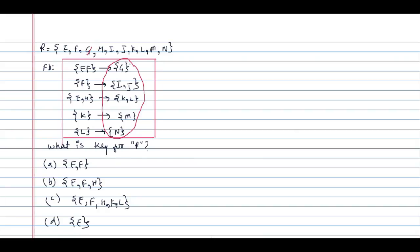G is present, I is present, J is present, K is present, L is present, M is present, N is present. That means there are three attributes which are not present on the right-hand side — that is E, F, and H. So any key in the relation must contain E, F, and H.